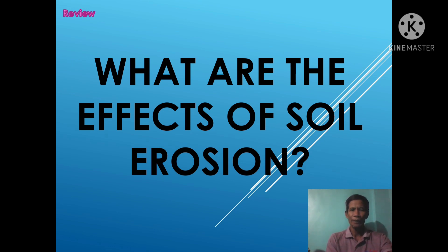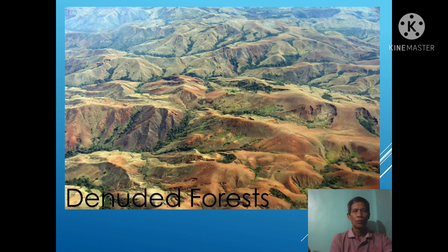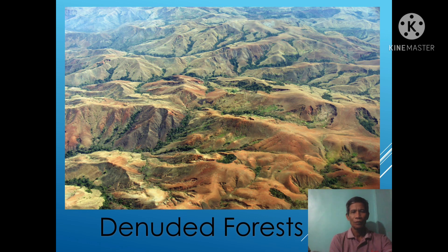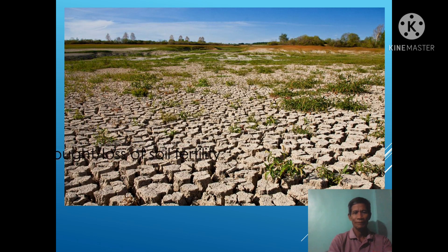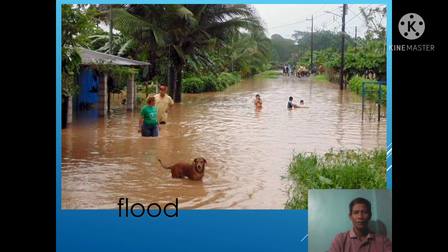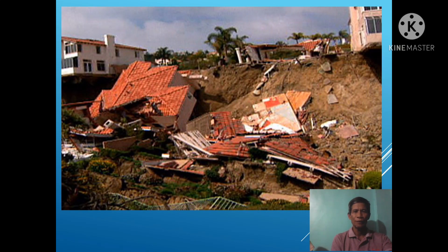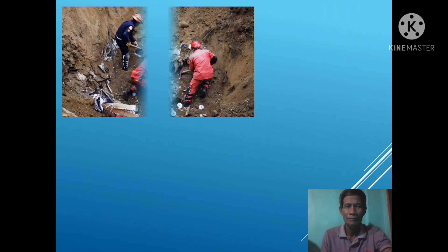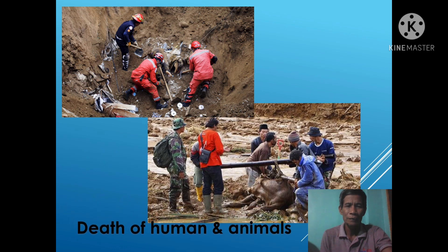Review: what are the effects of soil erosion? What can you see in the picture? Denuded forest, or forest without trees. How about this one? Drought or loss of soil fertility. Another — flood. And this picture is destruction of houses. And the last one is death of humans and animals.